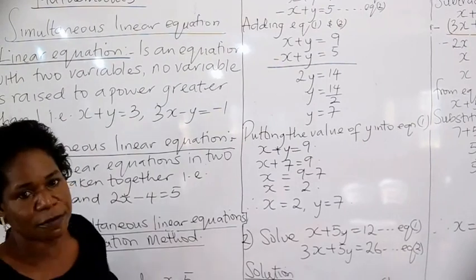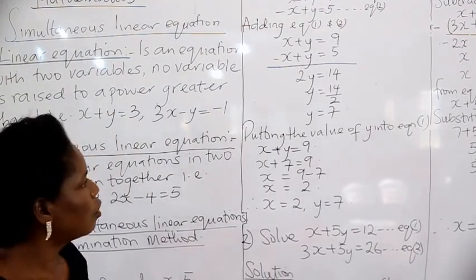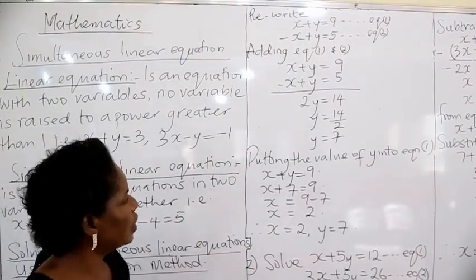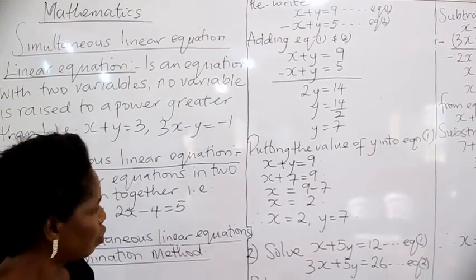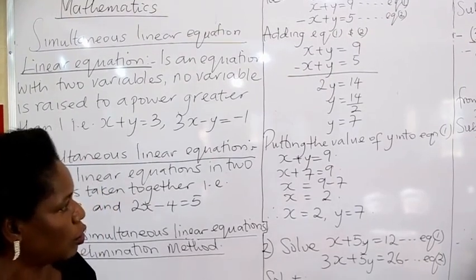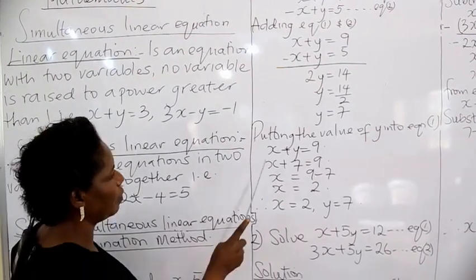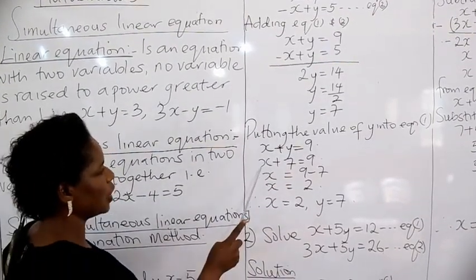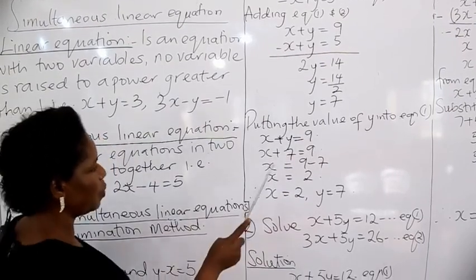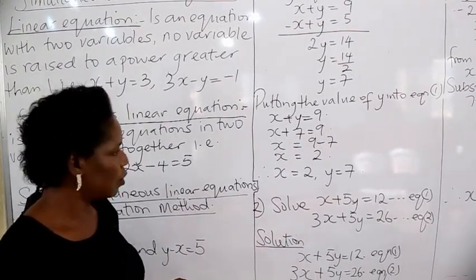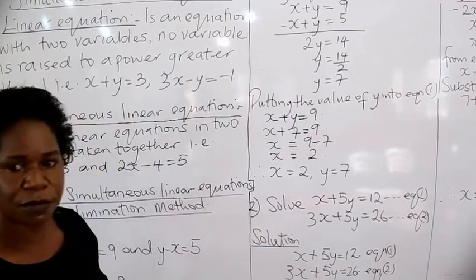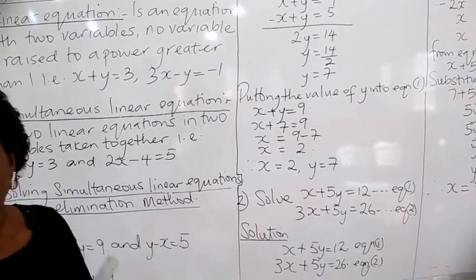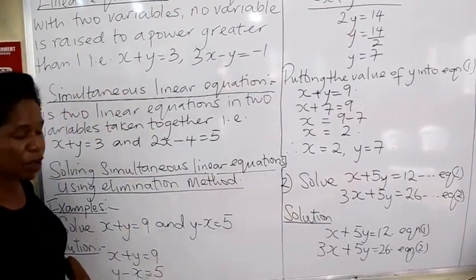Since we have gotten the value of y, we need to get the value of x. You need to substitute the value of y into any of the two equations above — equation 1 or equation 2. We have decided to use equation 1. So we have x plus y equals 9. By substituting y with 7, we get x plus 7 equals 9. Transferring plus 7 to the other side gives negative 7, so x equals 9 minus 7, which equals 2. So x equals 2 and y equals 7 is the solution to the two simultaneous equations.